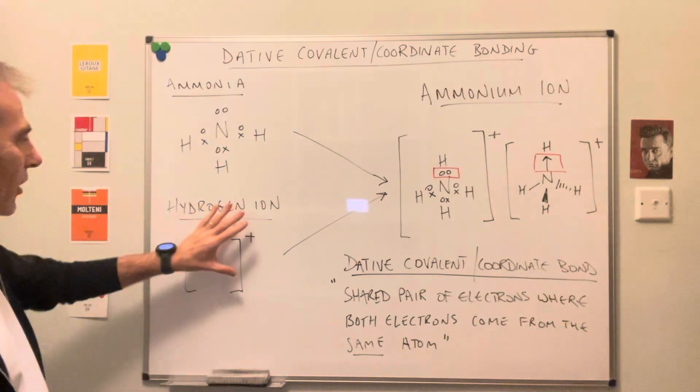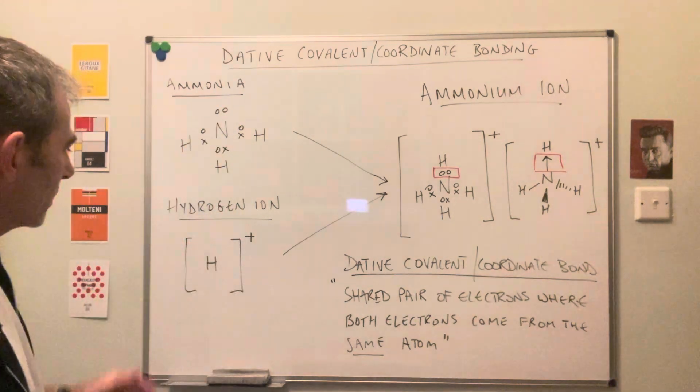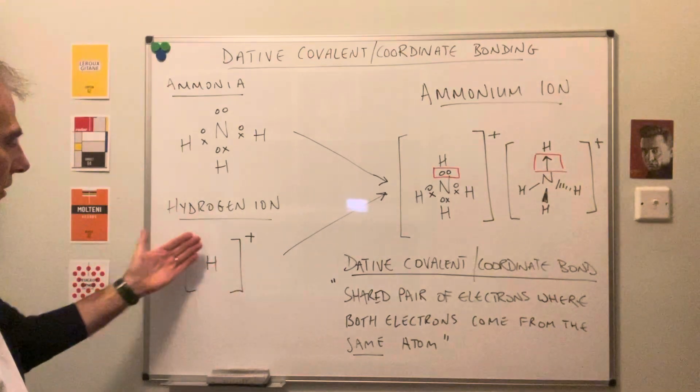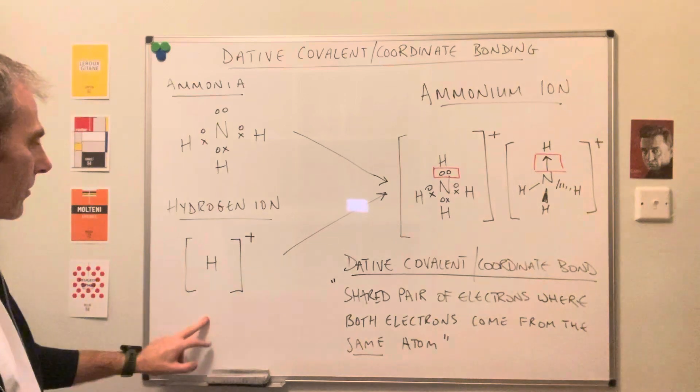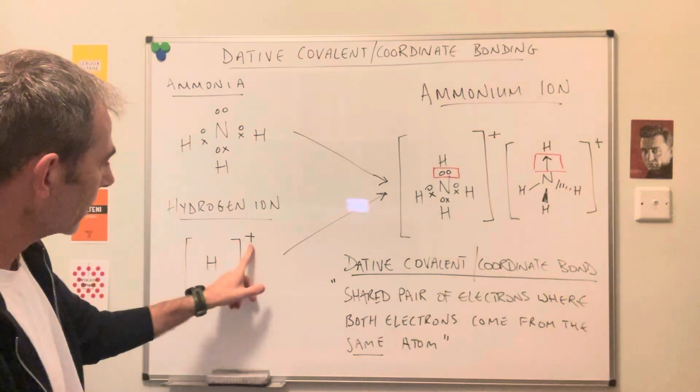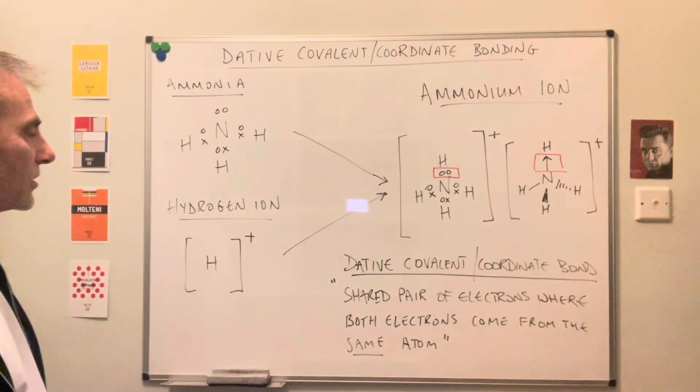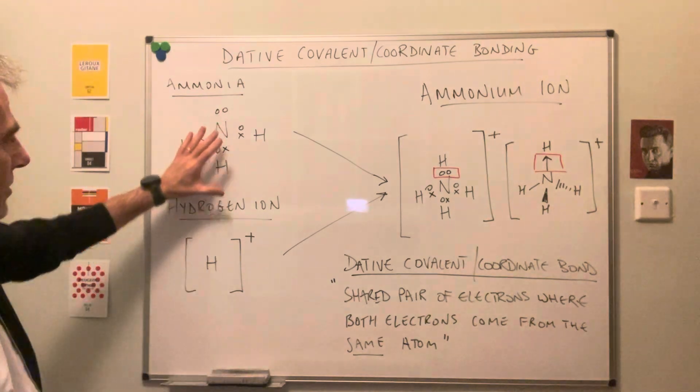And we've got a hydrogen ion down here. So that's literally just hydrogen with no electrons. It's lost its only electron and that gives it a positive charge. So how do these two bond together?